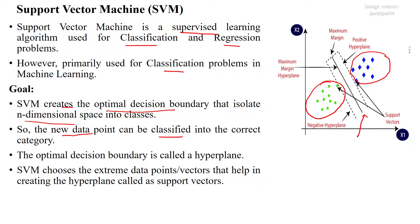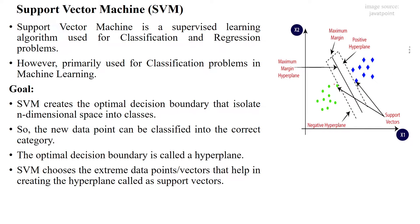That is the main goal of SVM — so whenever a new data point enters the model, it can be classified into the correct class category. The optimal decision boundary is called the hyperplane. SVM chooses extreme data points or vectors that help in creating the hyperplane; these are called support vectors. In this picture, this green color data point and this blue color data point are acting as support vectors.